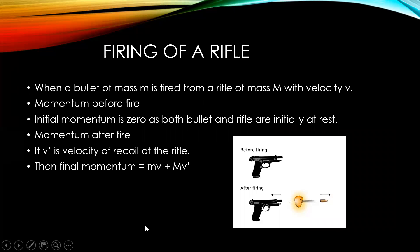The second example is the firing of a rifle — a gun in which we see before fire and after fire. We consider that the rifle has mass capital M and velocity V. Before firing, both the bullet and the rifle have zero velocity, so the total momentum is zero. After firing, the rifle moves in the backward direction because action and reaction forces are equal, opposite, and not applied to the same body.